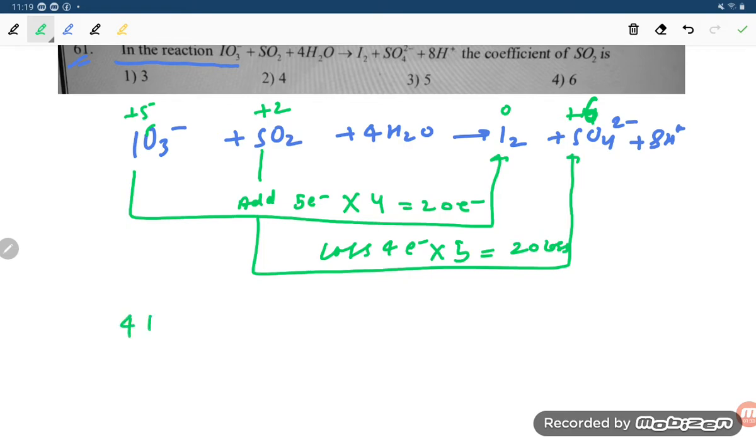Multiply this: 4 IO3 minus plus 5 SO2 plus 4H2O, it is giving I2. How many I2? That is 2 I2. Plus SO4, how many? This will be 5. And plus 8H plus.